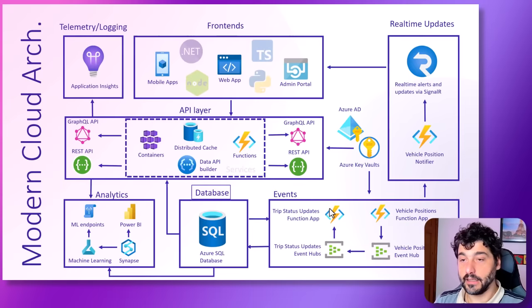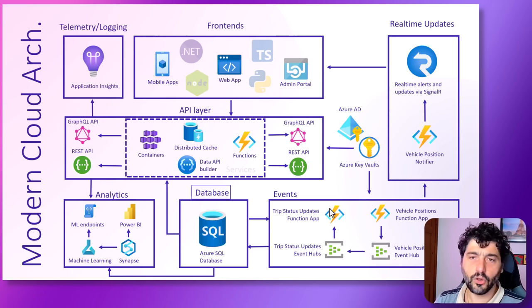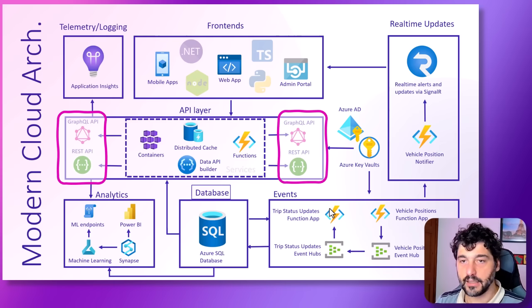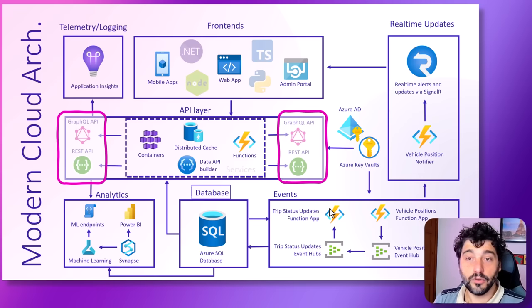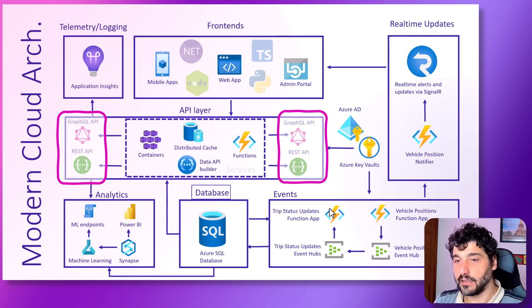Let's start with a very common architecture. It may seem complex, but it's actually very common and very frequent to see this architecture in customers' implementations. Basically, you have a database that services your data backend — one or more, actually — and then you have an API layer that allows the frontends or other services to connect and query the database.